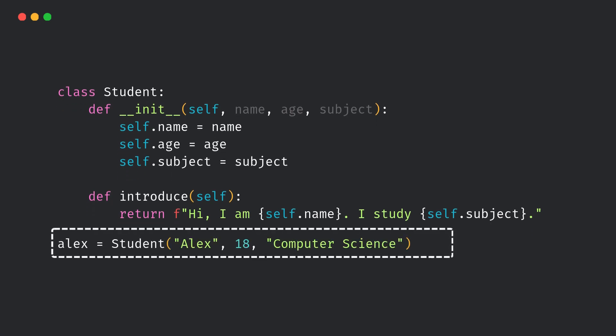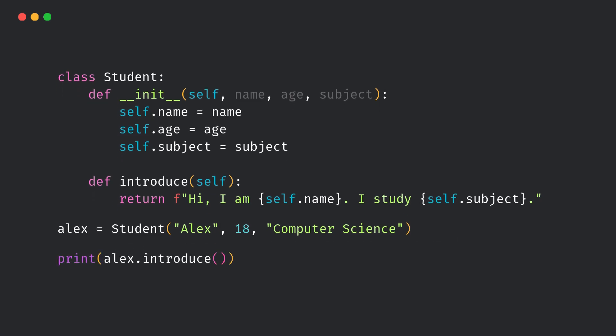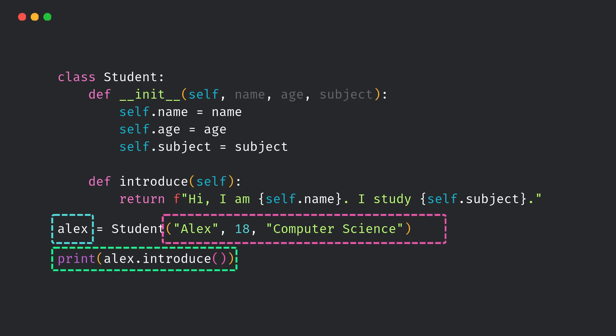Now comes the object. Python is using the student class to create a real object named Alex. That object has its own data, which includes name, age, and subject, and it can do something like introducing itself. So an object is a real instance that holds both data and behavior.